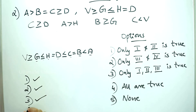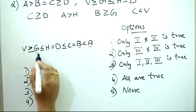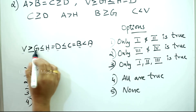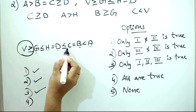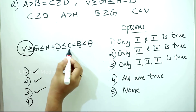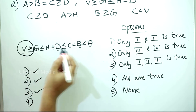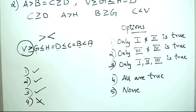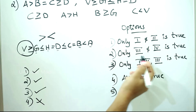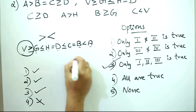The fourth step is correct. C is less than V — C is correct, V is correct. This step is correct. The second step is correct. This step is correct. The options are: only 1 and 2 is true, 3 and 4 is true. Option 3: 1, 2, 3 is true. So option 3 — click on option 3.